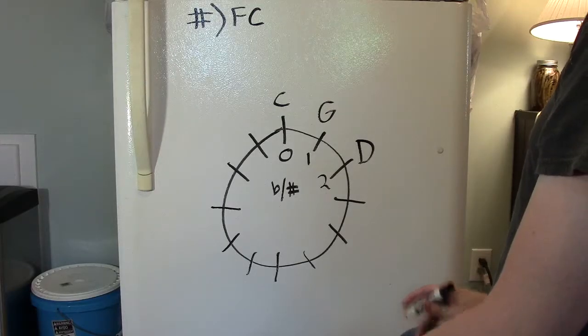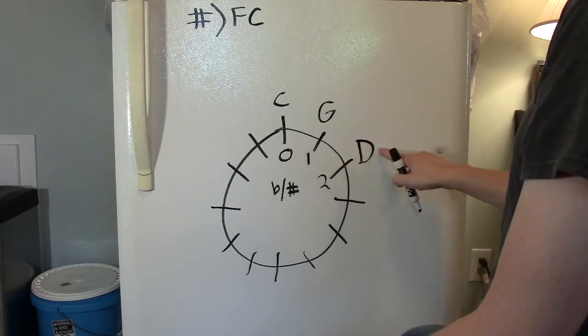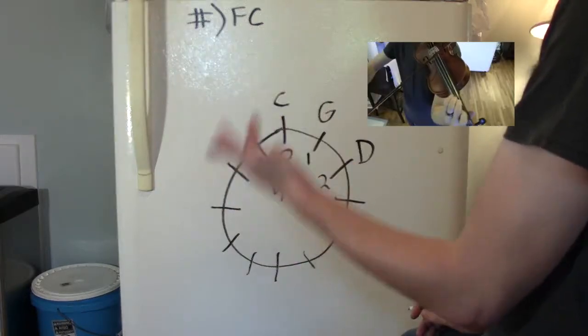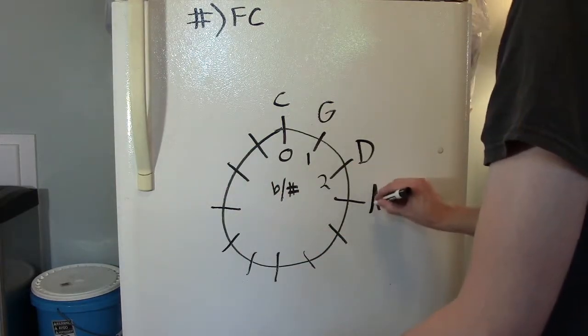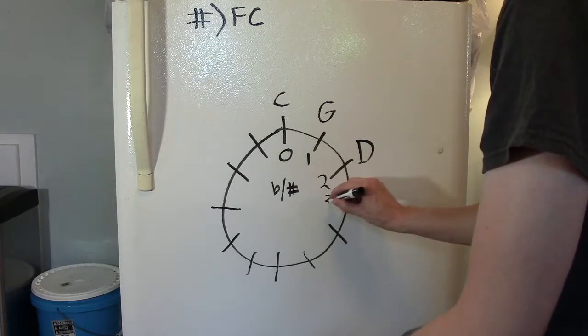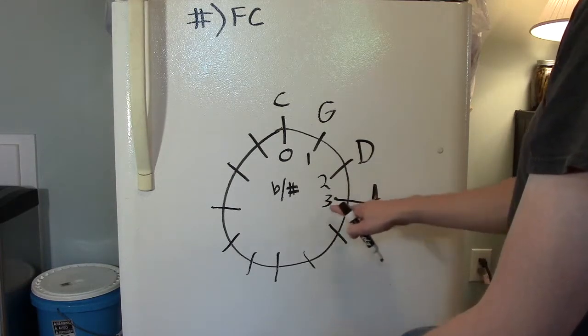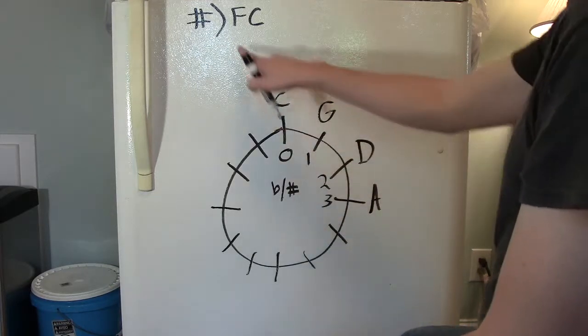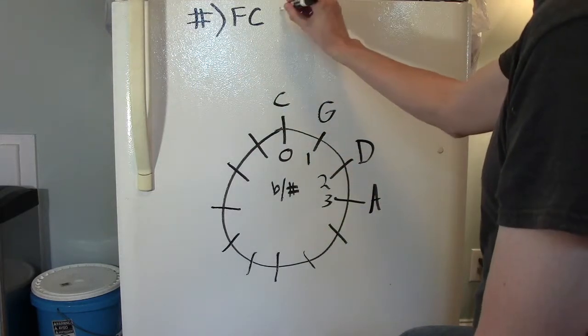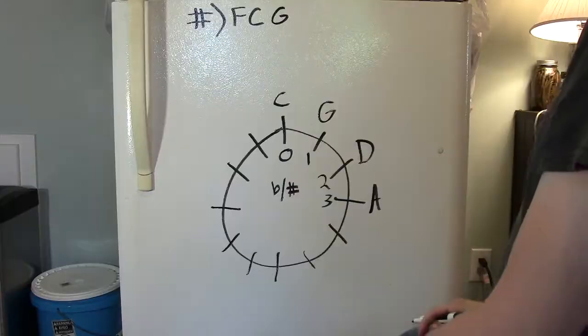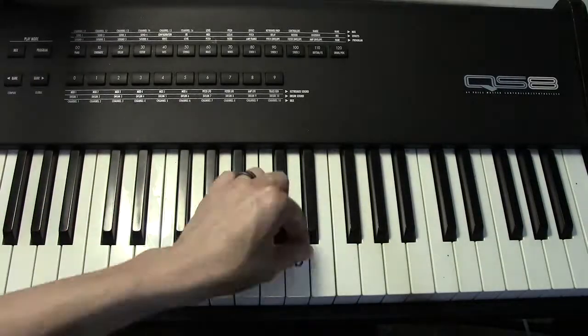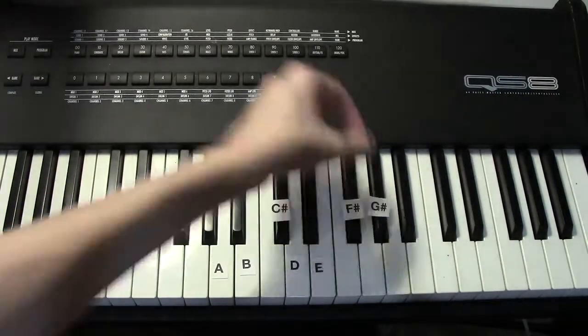And our circle must continue. What is a perfect fifth above D? Did you guess right? A is a perfect fifth above D. A major has three sharps in it. They are F, C, and G. C sharp, F sharp, G sharp.